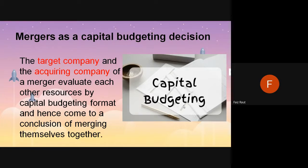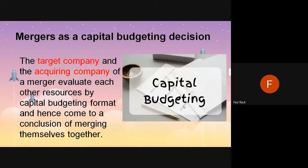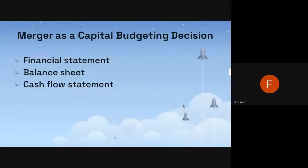Capital budgeting decisions are involved when any new thing happens in the company — any introduction of a new product, modifying products, or launching any new product. It will involve some cost, so there should be a calculation of budget. Even if there is a churning of human resource management or a new department has been opened up, that also involves capital budgeting decisions. Merger and acquisition is also a new kind of decision, so capital budgeting is involved in it.